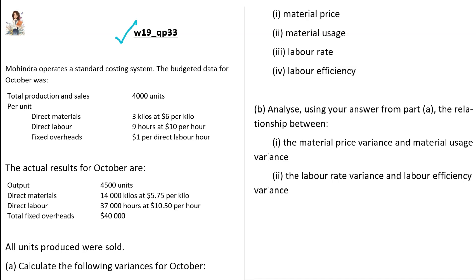We will now solve a past paper question — October/November 2019, paper variant 3.3. Mohinder operates a standard costing system. The budgeted data for October shows total production and sales of 4,000 units, along with per-unit details for direct materials, direct labor, and fixed overheads. We are also given the actual results for October including actual output and actual direct material, direct labor, and fixed overhead details. All units produced were sold. In part A1, we have to calculate the material price variance for October.